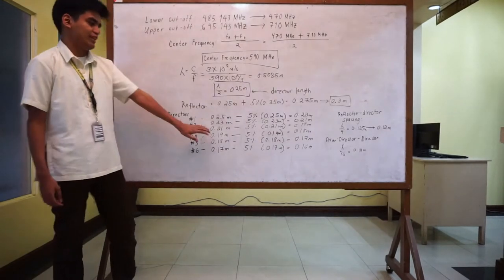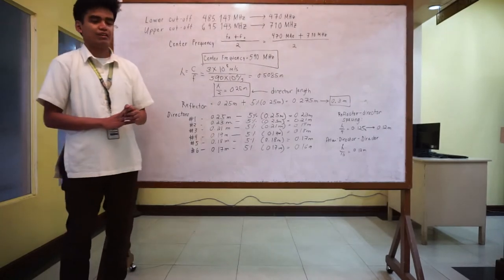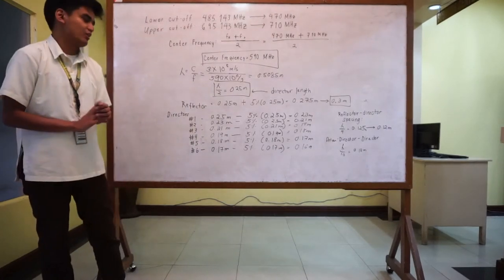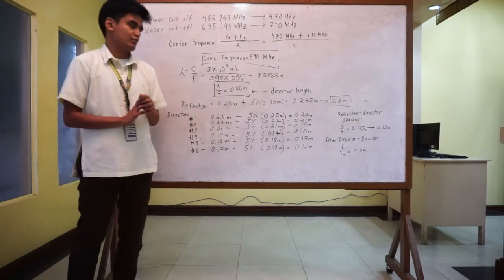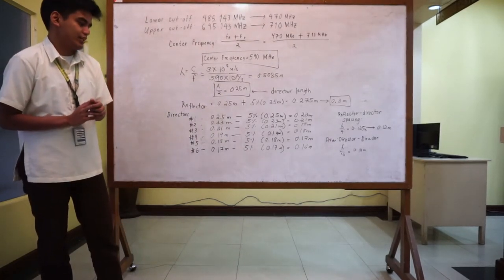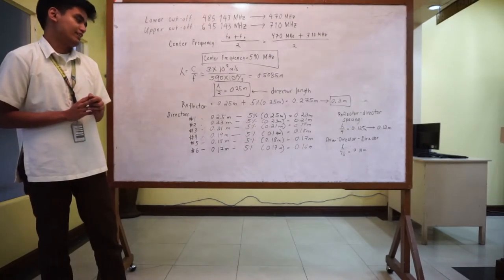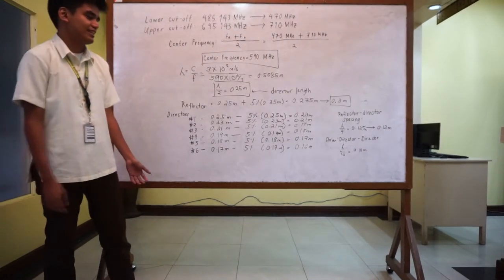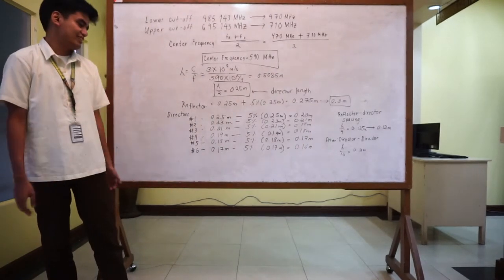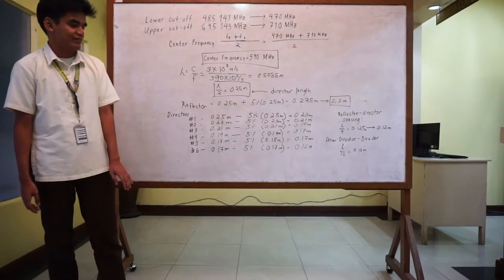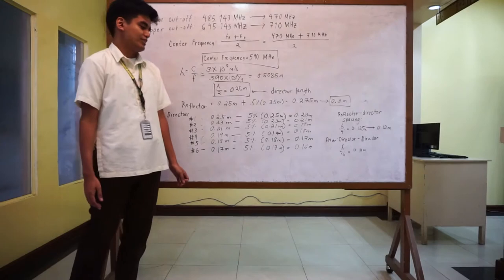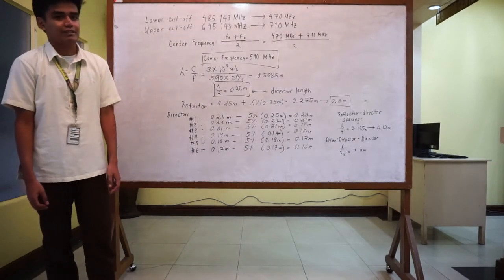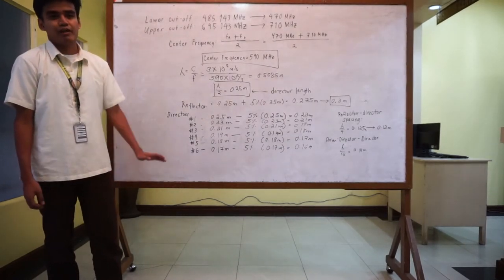For director number 2, we have 0.23 meters minus 5% of 0.23 meters, which is equivalent to 0.21 meters. For director number 3, we have 0.21 meters minus 5% of 0.21 meters, which is equivalent to 0.19 meters. Number 4 is 0.19 meters minus 5% of 0.19 meters is equal to 0.18 meters. Director number 5 will be 0.18 meters minus 5% of 0.18 meters is equal to 0.17 meters. And the last director will be 0.17 meters minus 5% of 0.17 meters, which is equivalent to 0.16 meters. These directors need to be smaller than the driven element because they need to be inductive so they will lead the electromagnetic waves so it will be pushed forward.